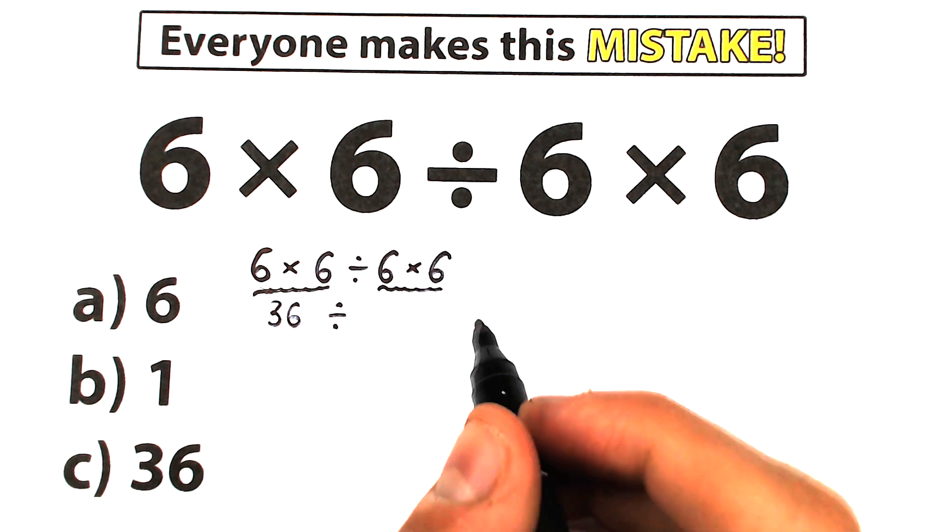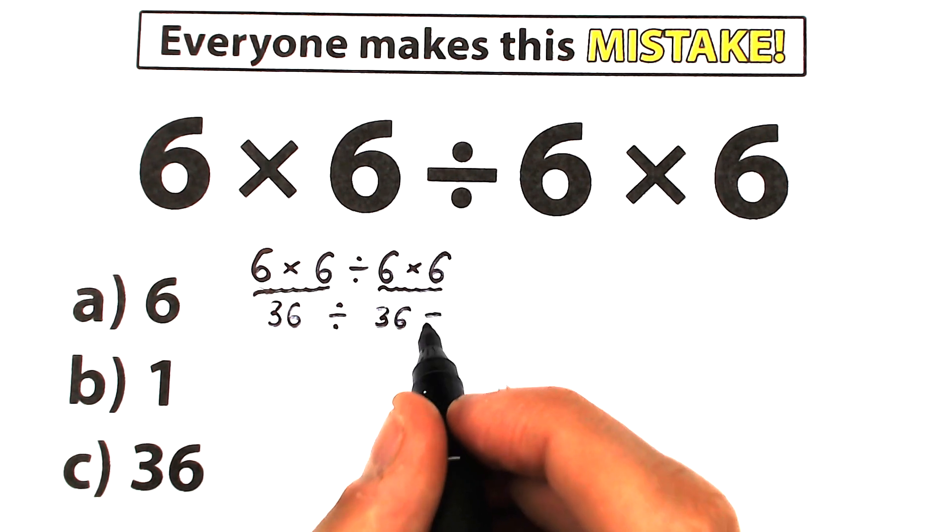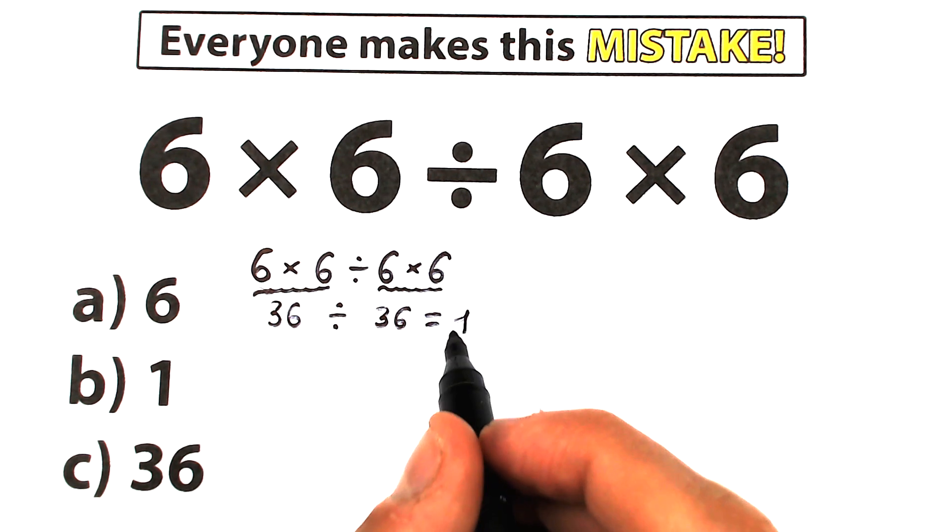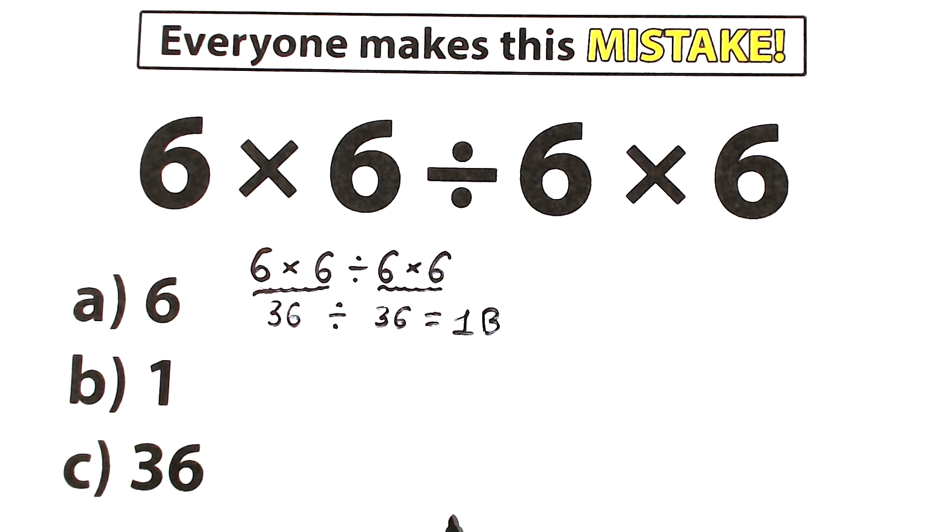which is equal to 36. So it looks like a correct answer, 36 divided by 36, equal to 1. We have this option, option B, we have right here. So it looks like option B is a correct answer.